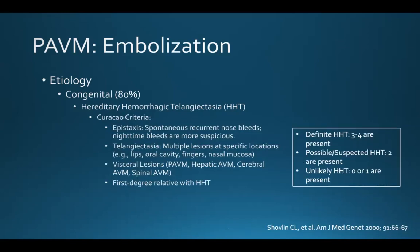HHT can be clinically diagnosed using the Curacao criteria, which involves three clinical manifestations: epistaxis, telangiectasias, and visceral AVMs, in addition to having a first-degree relative with HHT. If three to four of these criteria are present, there is a definite diagnosis of HHT. If only two are present, the diagnosis is possible or suspected, and HHT is unlikely if zero or one criterion is present.